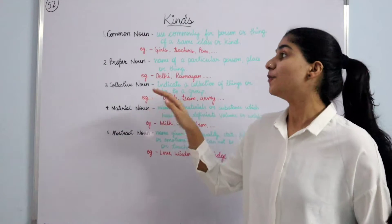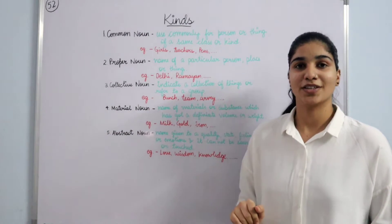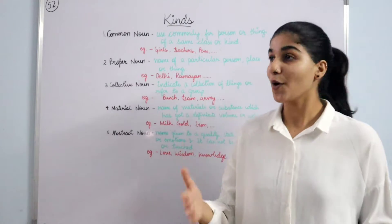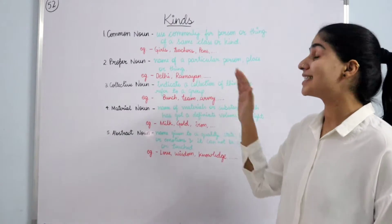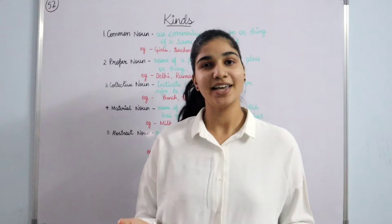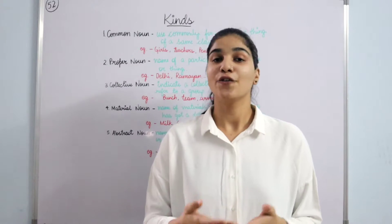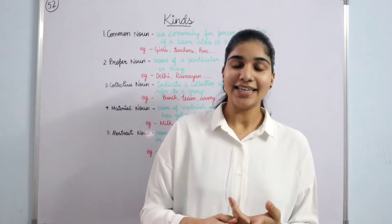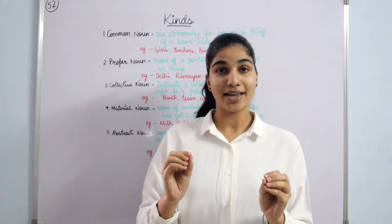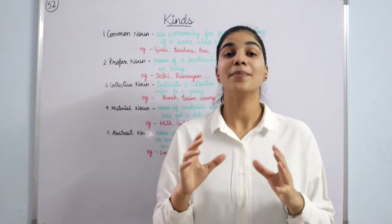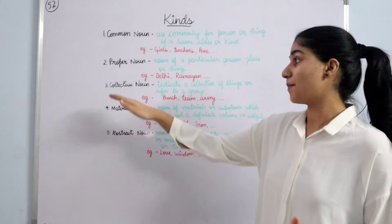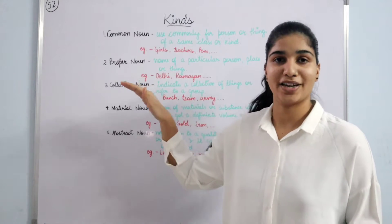Second we have proper noun. What do we mean by proper noun? Proper noun is the name of a particular person, place or thing. For example, Delhi — that's a particular place; Ramayana — that's a particular book. These all are examples of proper noun.